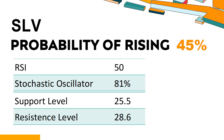The current stochastic oscillator of SLV is 81%. When the stochastic oscillator rises above the 80 level, it is usually considered overbought, indicating that the stock may be due for a price pullback. An overbought condition occurs when a stock's price rises too fast and too high in a short period of time, and can be a sign that buying pressure has exhausted.